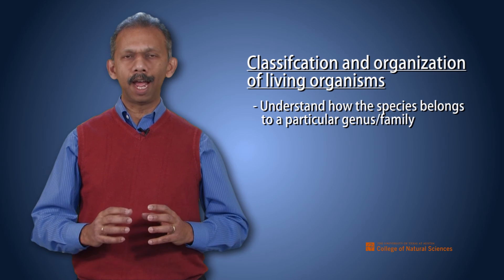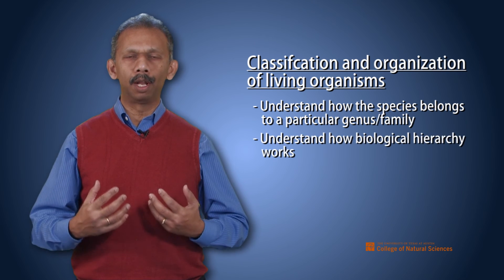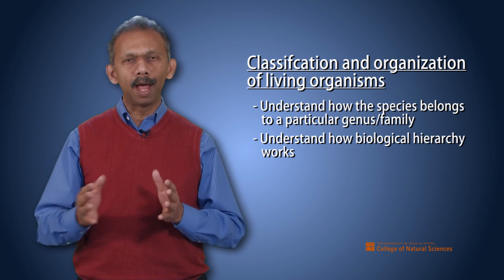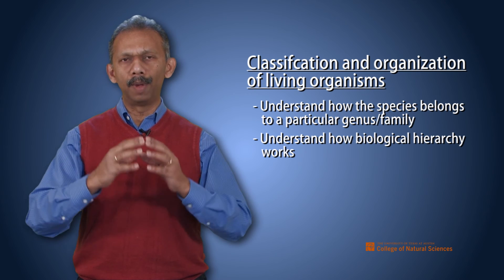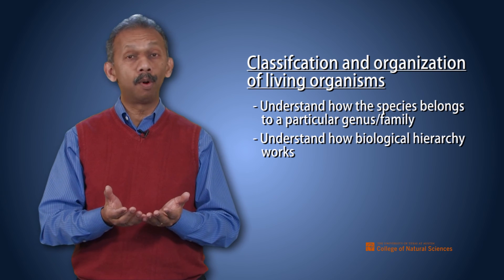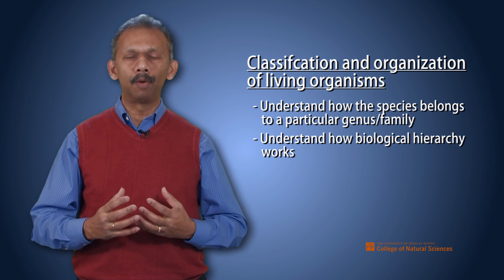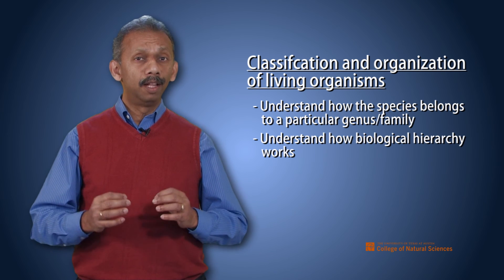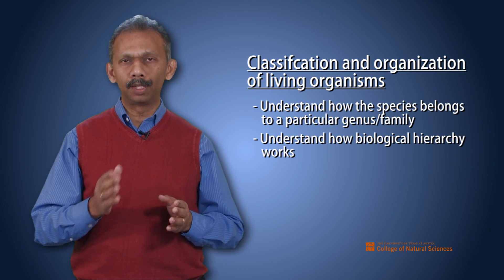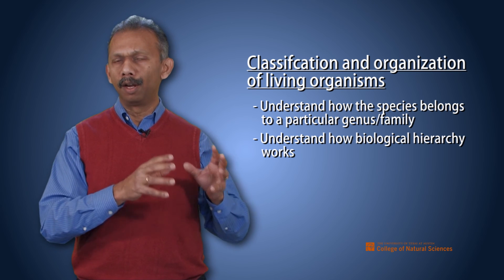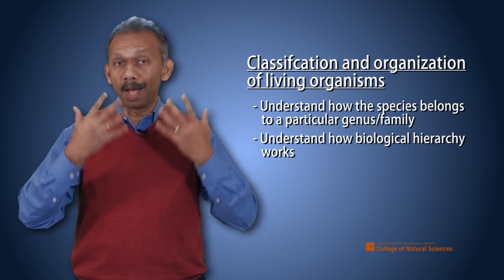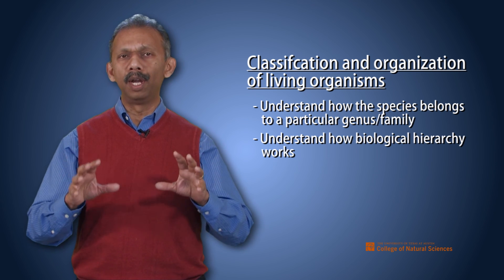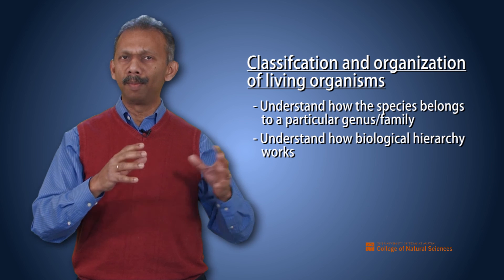You also need to understand how the biological hierarchy works. It refers to how simple atoms and molecules combine to make macromolecules, which combine to make different parts of the cell. A cell can be a living organism at the unicellular level, or combine further into multicellular organisms — forming a tissue, an organ, an organ system, and a multicellular organism. Beyond that, you move into population, community, ecosystem, and biosphere.